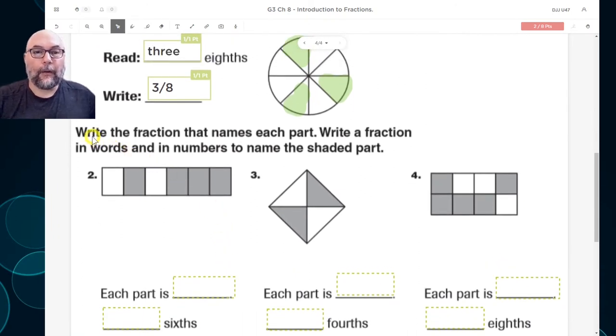Number two. This is really confusing to me so please pay attention. So here we go. Write the fraction that names each part. Write a fraction in words and in numbers to name the shaded part. So write the fraction that names each part. We're going to name, we're going to write the fraction that names each part and then we're going to write a fraction for the shaded part.